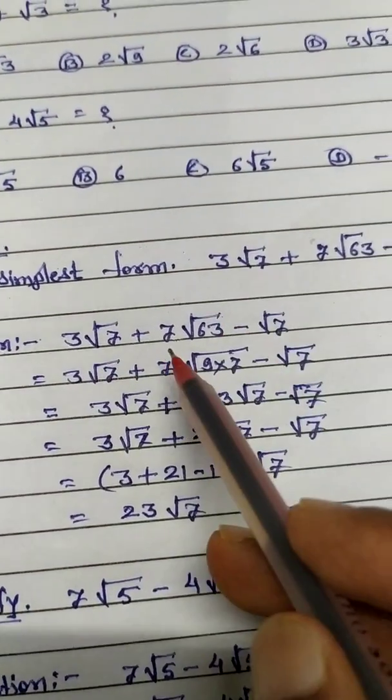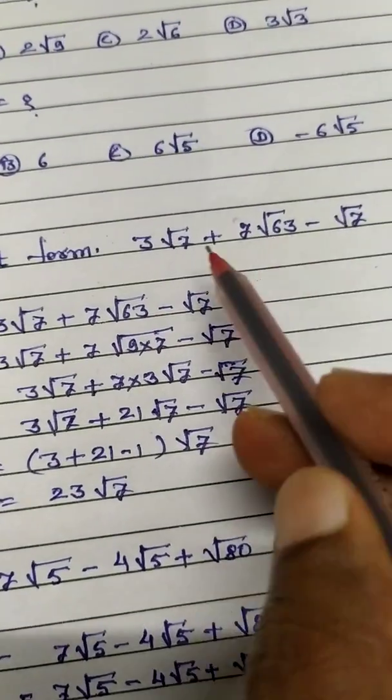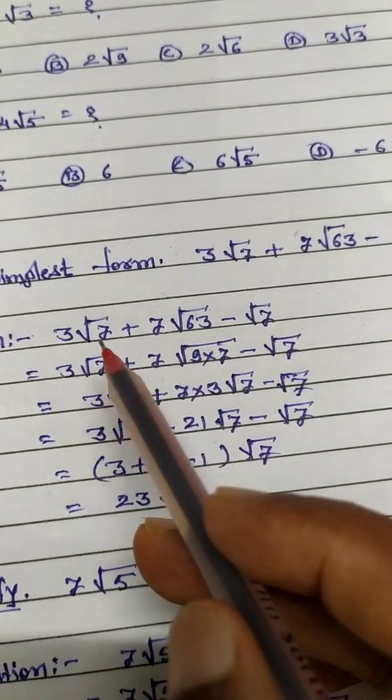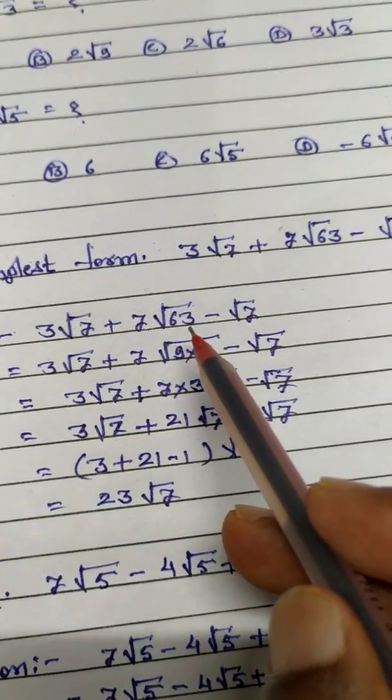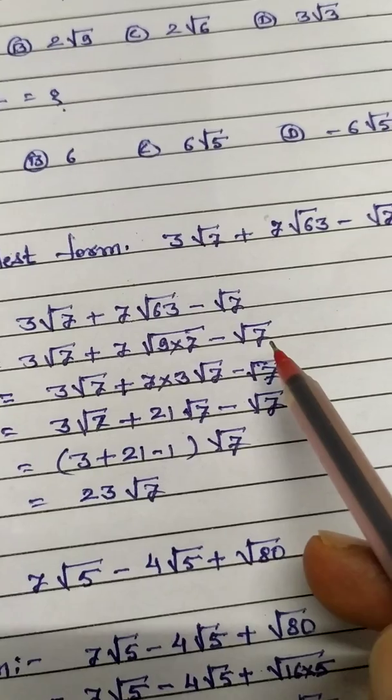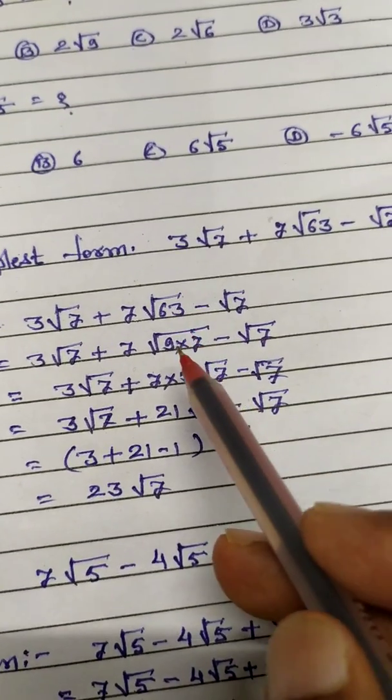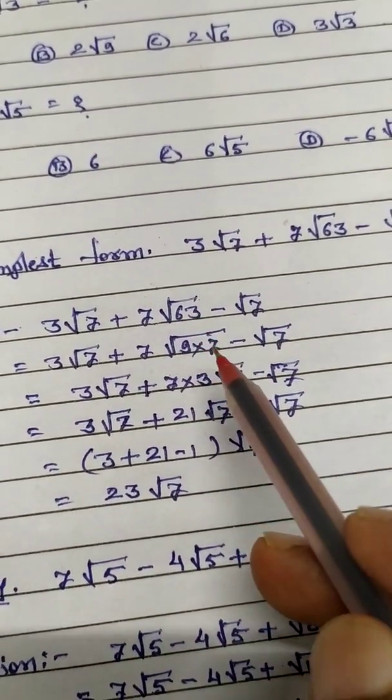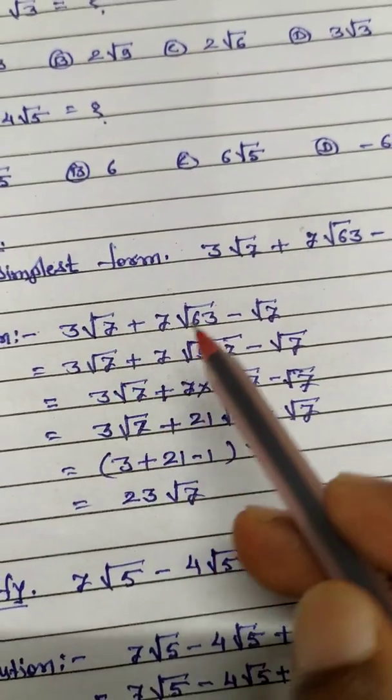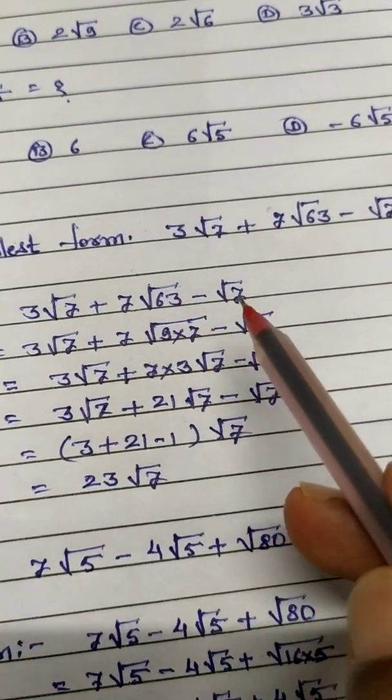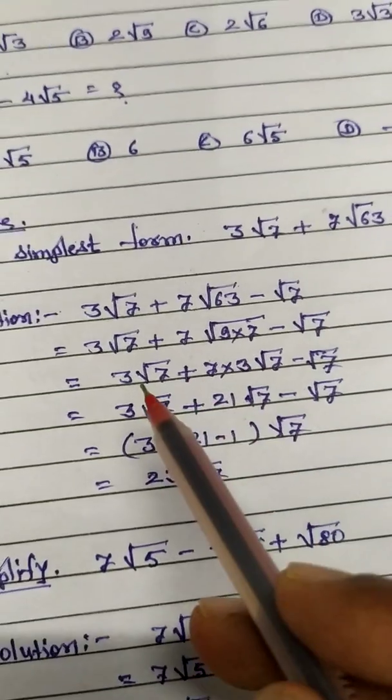So 3 root 7 as it is, plus this example write as it is. Now I convert this 63 into this radicand 7. So 9 times 7 is 63. Now again I write this same as it is, 63 means 9 times 7 is 63, and minus root 7 as it is.